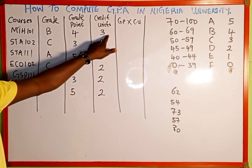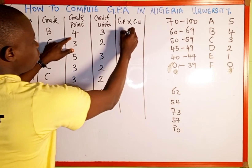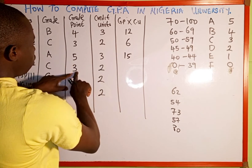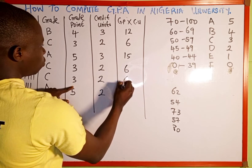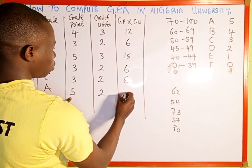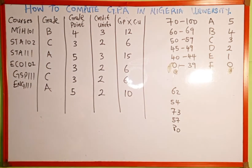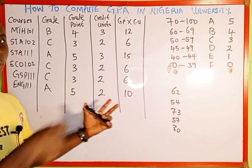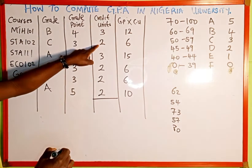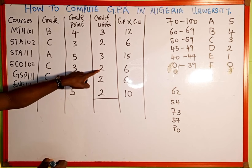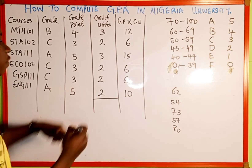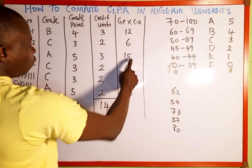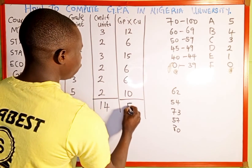The next thing is to compute grade point multiplied by credit unit for each course: 4 × 3 = 12, 3 × 2 = 6, 5 × 3 = 15, 3 × 2 = 6, 3 × 2 = 6, and 5 × 2 = 10. Then we sum the total credit units: 3 + 2 + 3 + 2 + 2 + 2 = 14. And the sum of grade point times credit unit: 12 + 6 + 15 + 6 + 6 + 10 = 55.